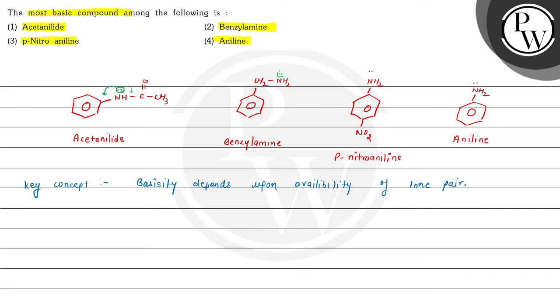Now in benzylamine, this NH2 lone pair is not in conjugation with this benzene ring, so it is available. In paranitroaniline, the lone pair is also in conjugation, and in aniline, the lone pair is in conjugation.